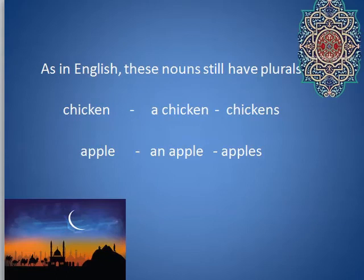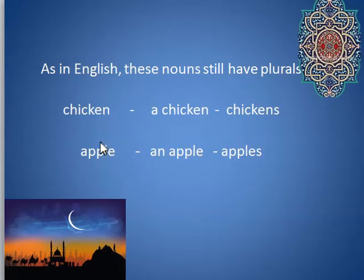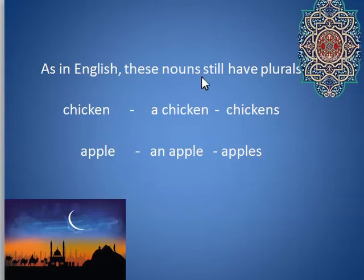As in English, these nouns can still have plurals. So notice the difference: there's chicken — just generic for some amount of chicken — then a chicken, which is one, and chickens, which are several. We have apple, apple pie, apple cobbler, an apple, or apples. So there are three different quantities of these nouns: singular, plural, and then of course there's dual if you had two chickens, and this generic collective term.